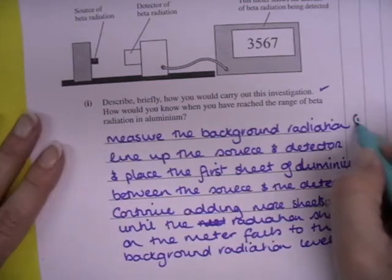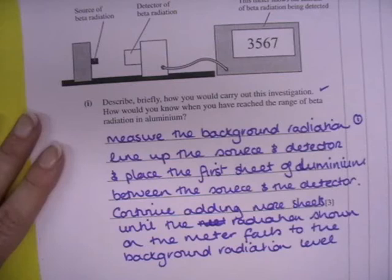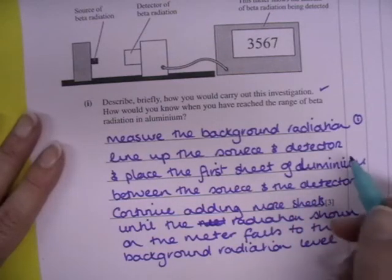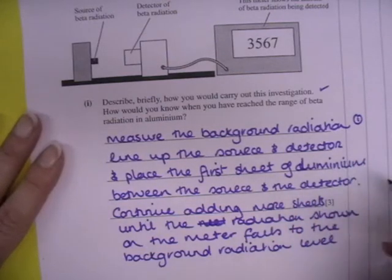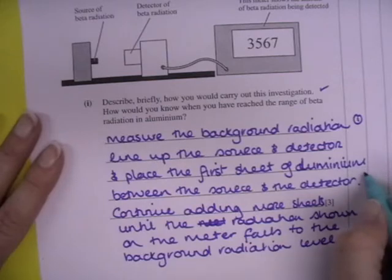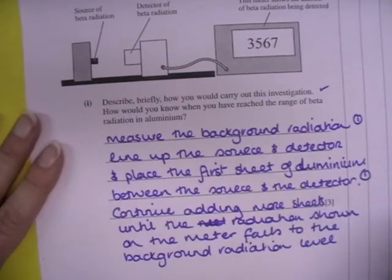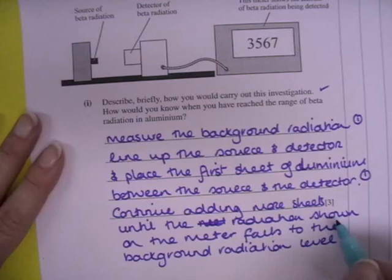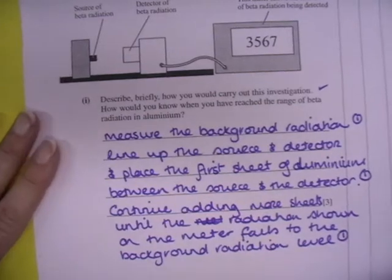So the first mark will be for measuring the background radiation, the second mark then is for lining up the source detector, placing the first sheet of aluminum between the source and the detector, and then the third mark is for continuing adding more sheets until the radiation on the meter falls to the background radiation level. So that would be the fullest answer for that.